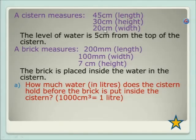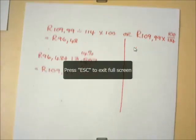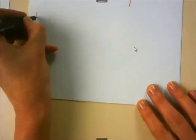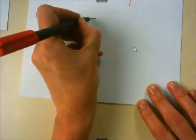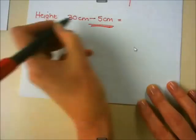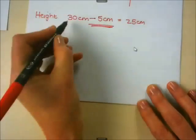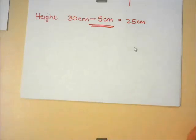Volume equals length times breadth (or width) times height. But one important thing to realise is that the height isn't the full 30 centimetres, because the water stops 5 centimetres from the top. So the height of the water is 30 centimetres minus 5 centimetres. You must subtract that 5 centimetres before using the height measurement. We're going to work with 25 centimetres, not 30, because we want the volume of the water in the cistern.